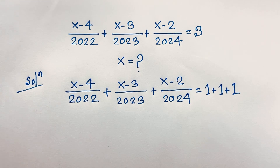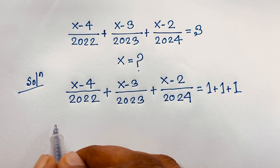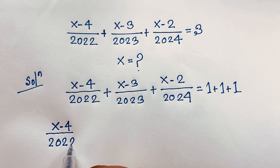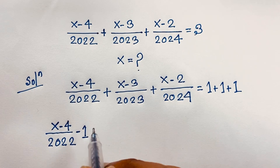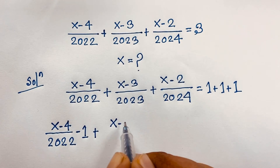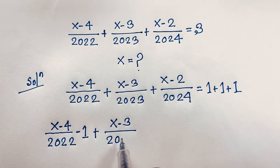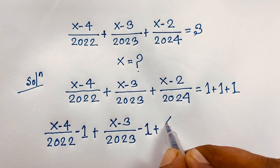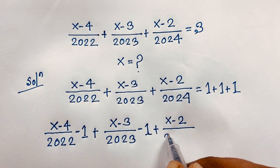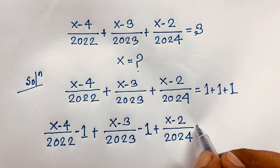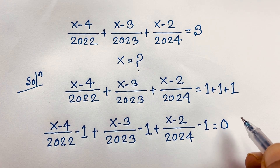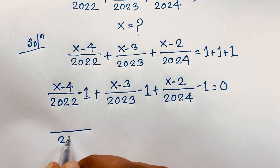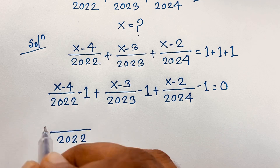Now, take each fraction and move its corresponding 1 to the left side. We get: (x minus 4) over 2022 minus 1, plus (x minus 3) over 2023 minus 1, plus (x minus 2) over 2024 minus 1, equals 0. The least common value for the first term is 2022.